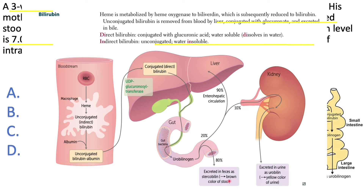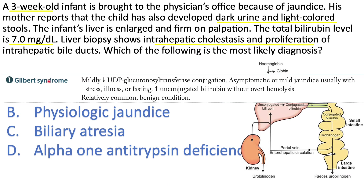Dark urine and light colored stool is a giveaway that there is increased conjugated bilirubin. Conjugated bilirubin is water soluble — if it can't make it to the intestine, it cannot give feces their brown color, so they'll be pale. It will back up into the blood and because it's water soluble, it goes down the kidney giving urine a dark color. So I'm excluding all causes of unconjugated hyperbilirubinemia, including physiologic jaundice and Gilbert syndrome.